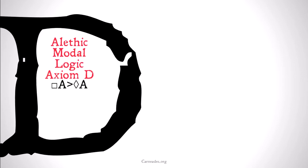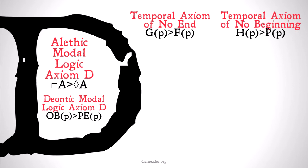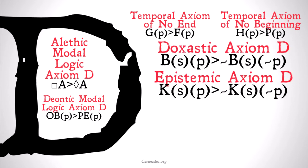As you may remember from many of the previous modal logic series, axiom D kind of looks like this. Basically, we have the strong modal operator implying the weak modal operator. For doxastic and epistemic logic, it's going to look as follows: if S believes that P, then it's not the case that S believes that not P.